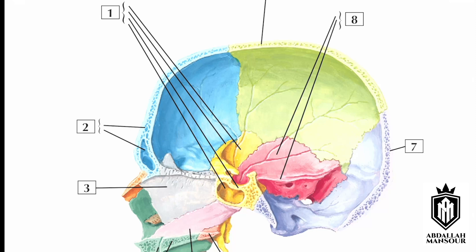Now looking at a sagittal section of the skull, identifying the same bones seen previously. Number one is the sphenoid bone with its parts: the greater wing of the sphenoid and the lesser wing of the sphenoid. The empty space inside the sphenoid bone is called the sphenoid air sinus.